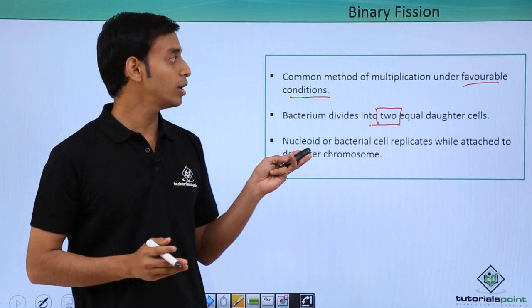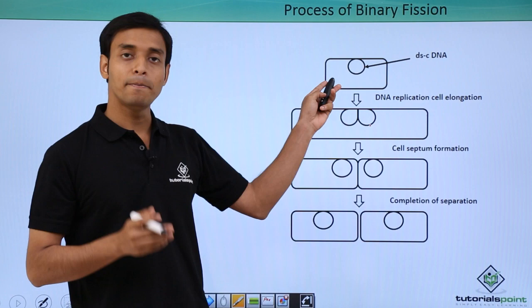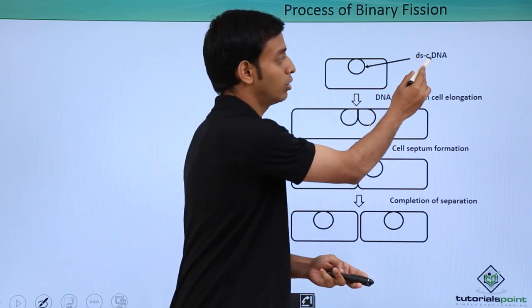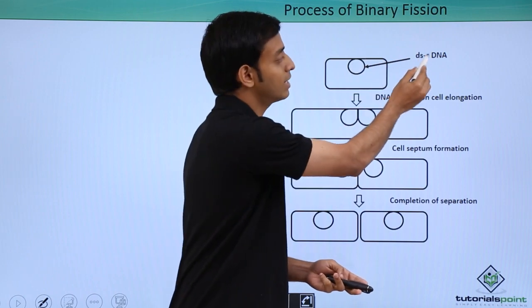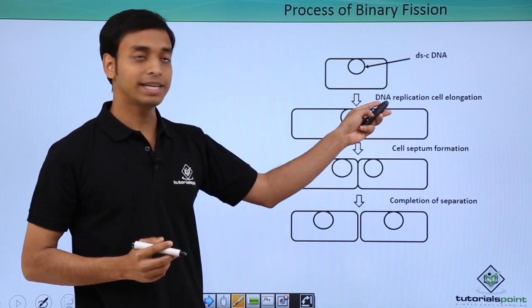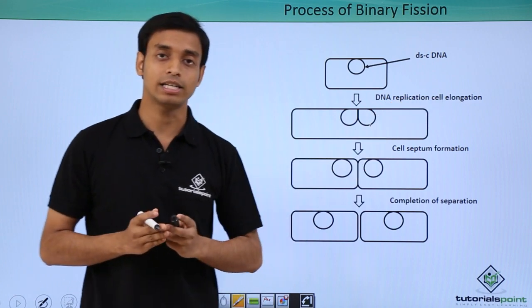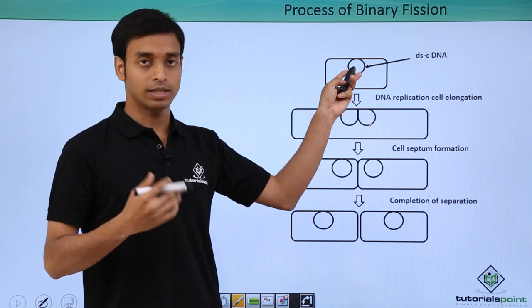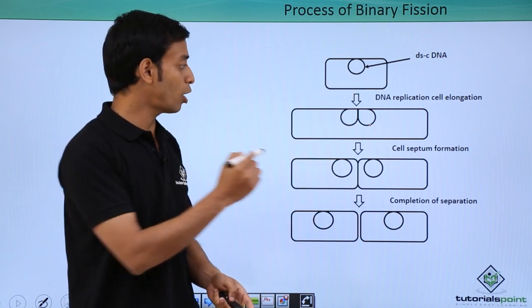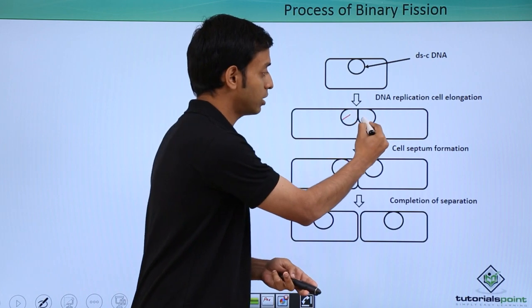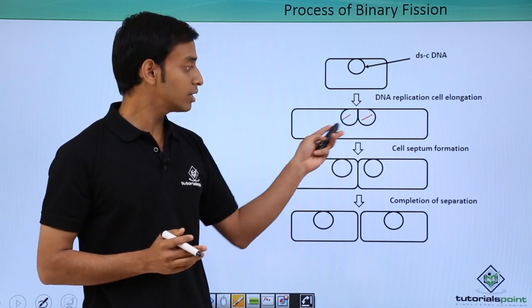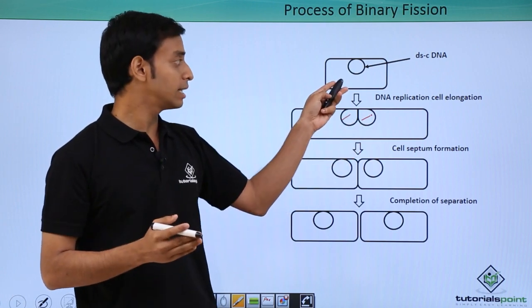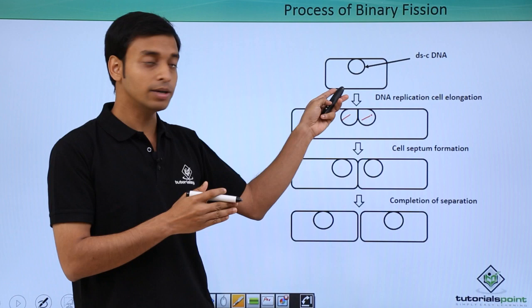To understand this process, we'll look into a diagram. This is a parent bacterium. We see it has a double-stranded circular DNA. Please take note: double-stranded circular DNA. This replicates and cell elongation takes place. Replication means the doubling or duplication of the existing DNA. Two copies are formed, as we are seeing: one, two. After this replication process, it is followed by cell elongation. We can see that from the parent, if we compare with the parent cell, this cell is elongated. Its volume and mass also increase.